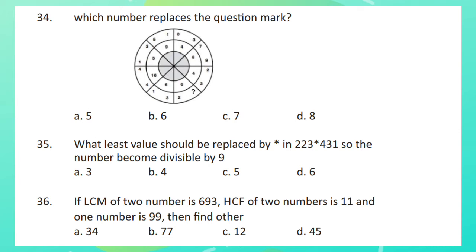Question 36. If LCM of two numbers is 693, HCF of two numbers is 11 and one number is 99, then find other.